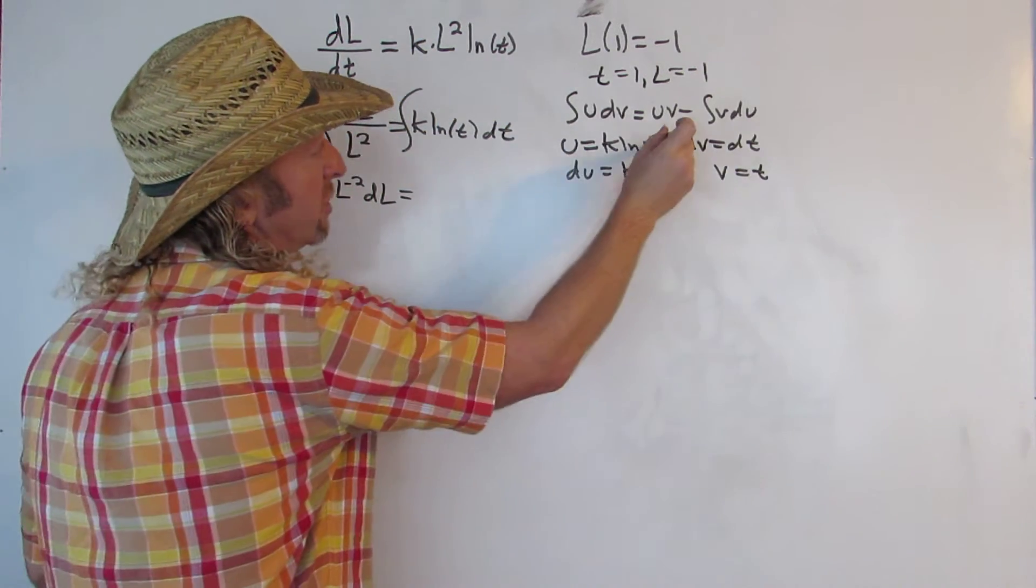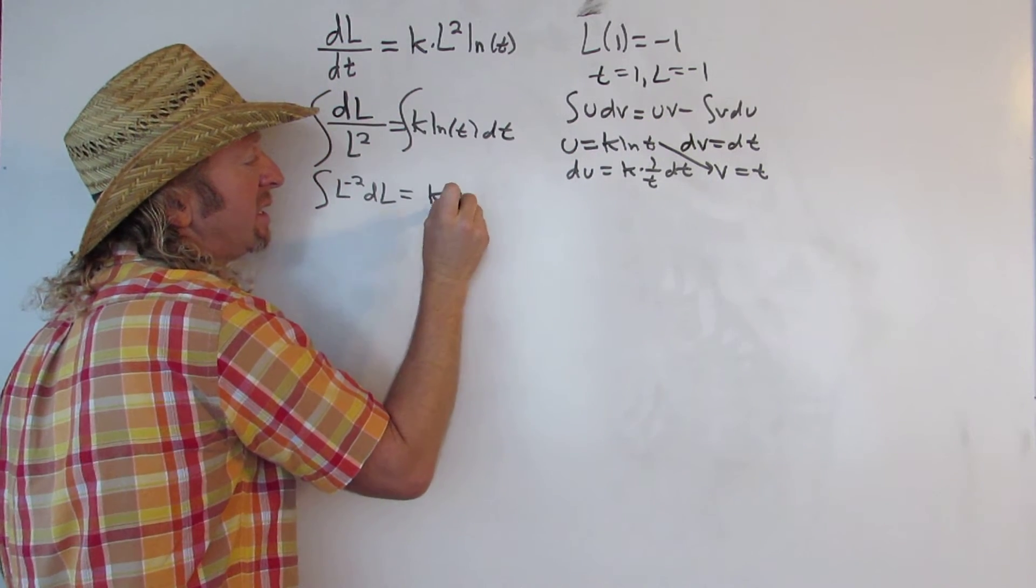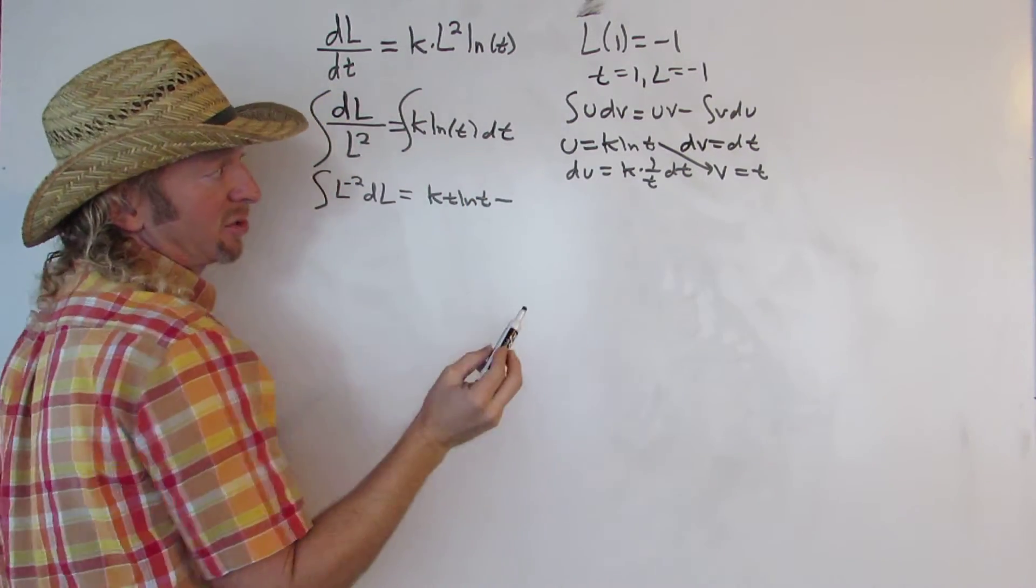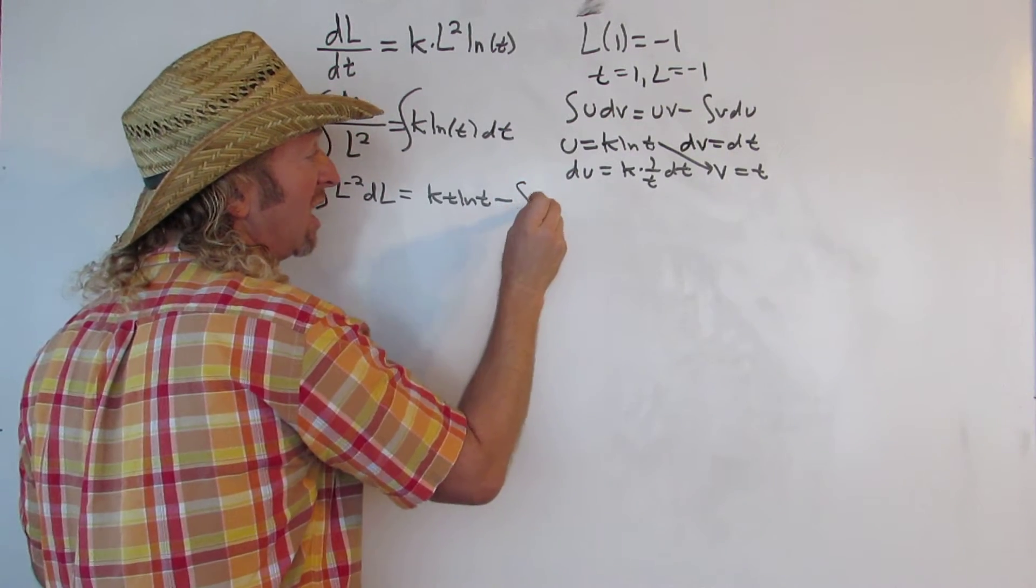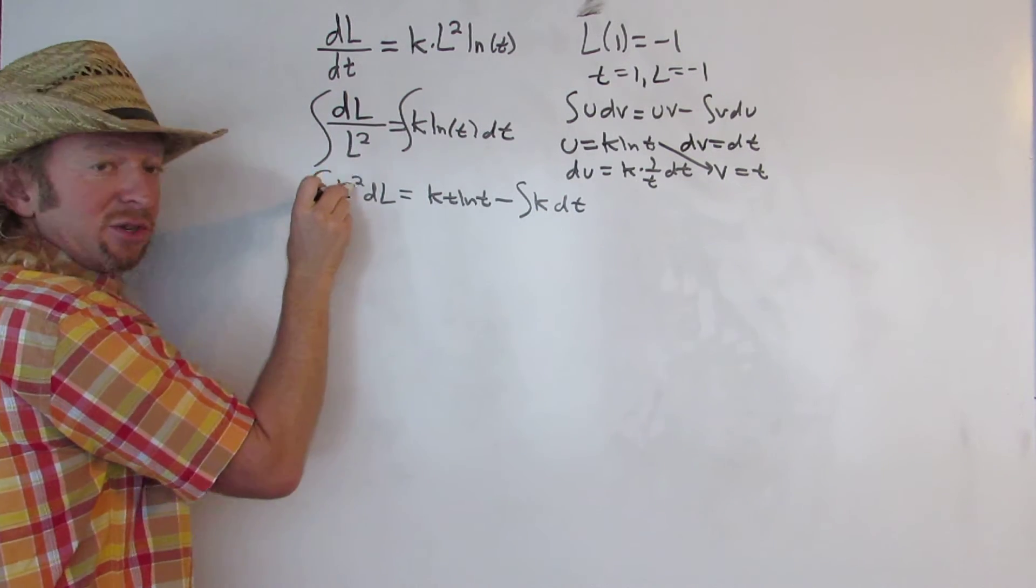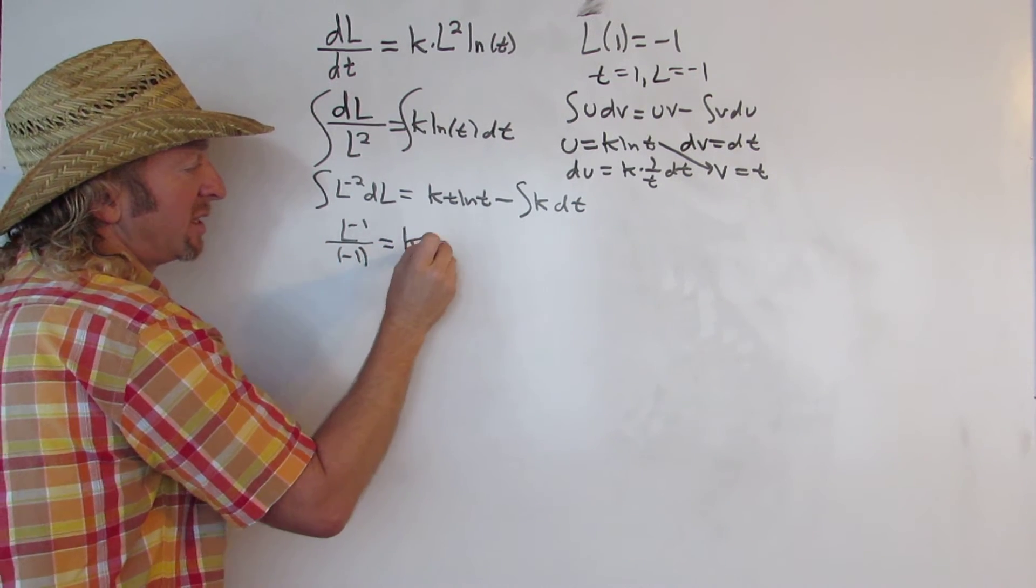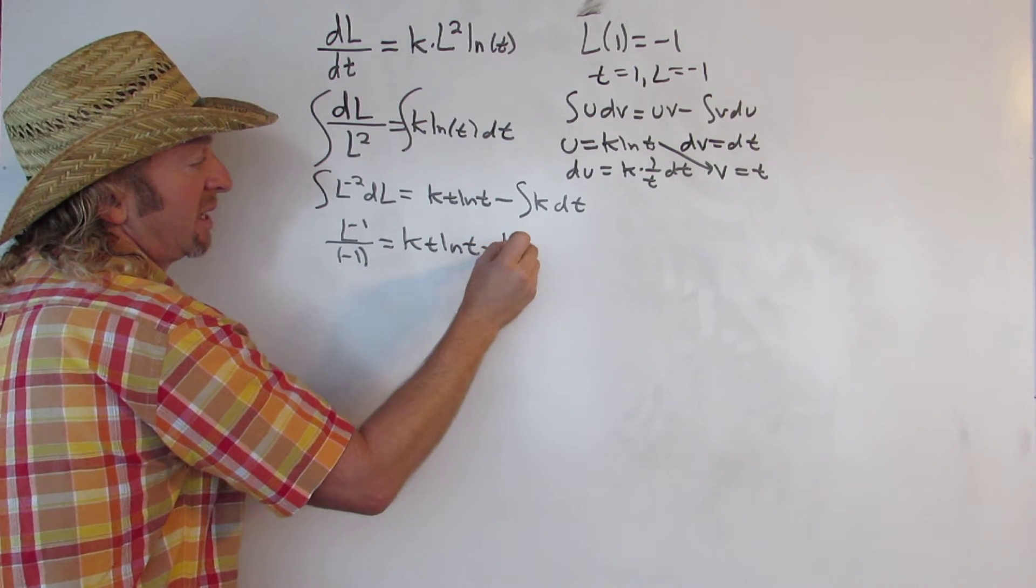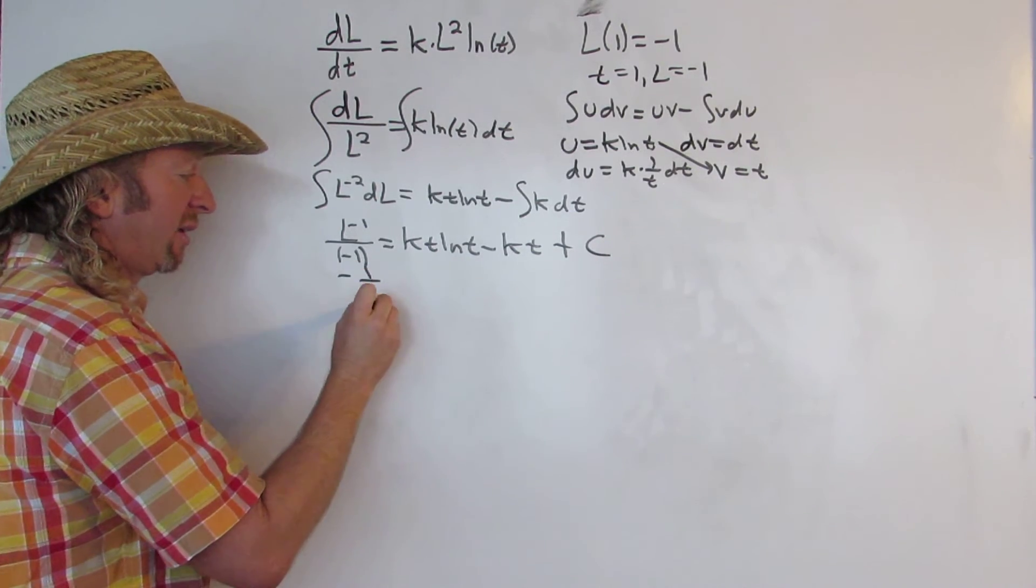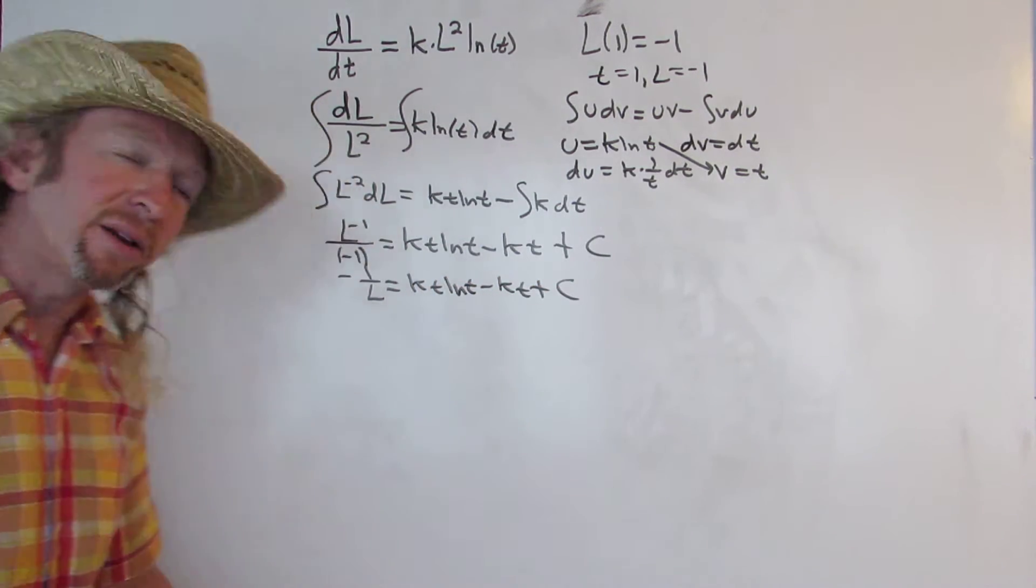Alright, good stuff. So now we'll use the parts formula. So it's uv, so it'll be kt ln t minus the integral of vdu. So the t's cancel, so you just get k dt. So this is going to be, when you integrate this one, you add 1, you use the power rule. You get l to the negative 1 over negative 1 equals kt ln t minus kt plus our constant which I'll call c. So this is going to be negative 1 over l equals kt ln t minus kt plus c. Let me go over that again because I went kind of fast.